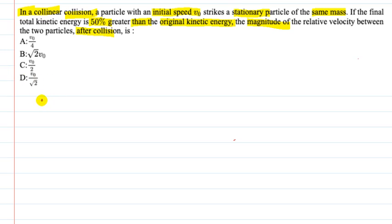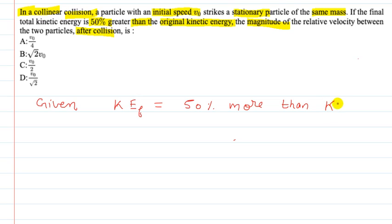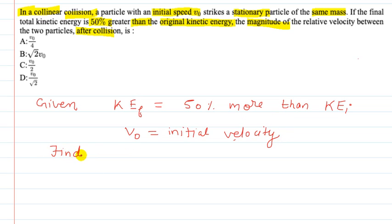Now, in this question, the given quantities are: final kinetic energy is 50% more or greater than the initial kinetic energy. I am writing initial kinetic energy as Ki and final as Kf. Both particles have the same mass, and the initial velocity is given as V0. What we have to find is the relative speed or relative velocity.